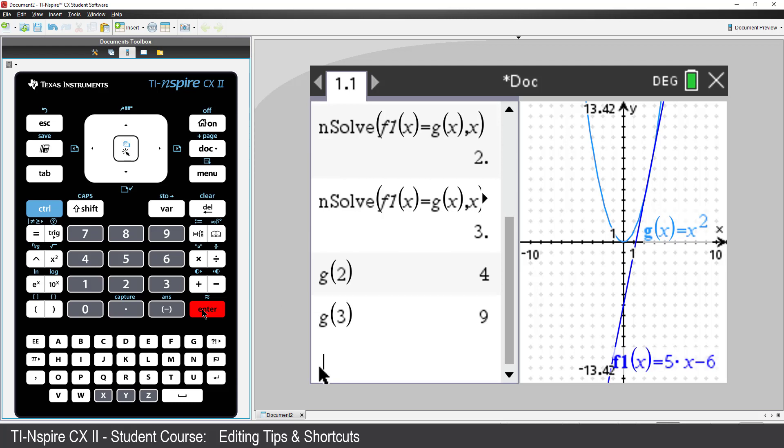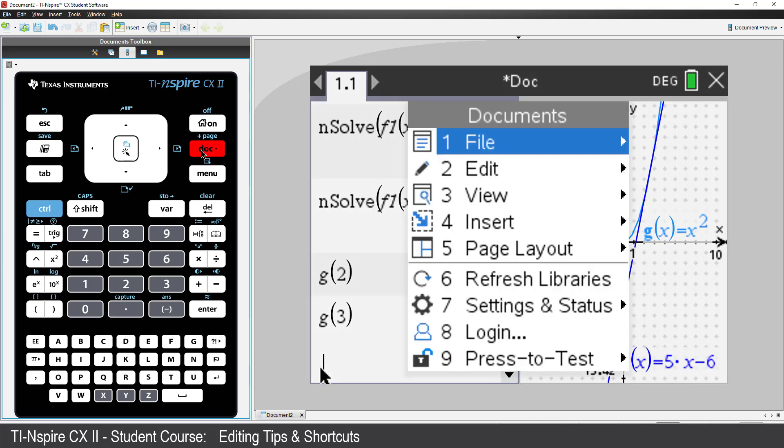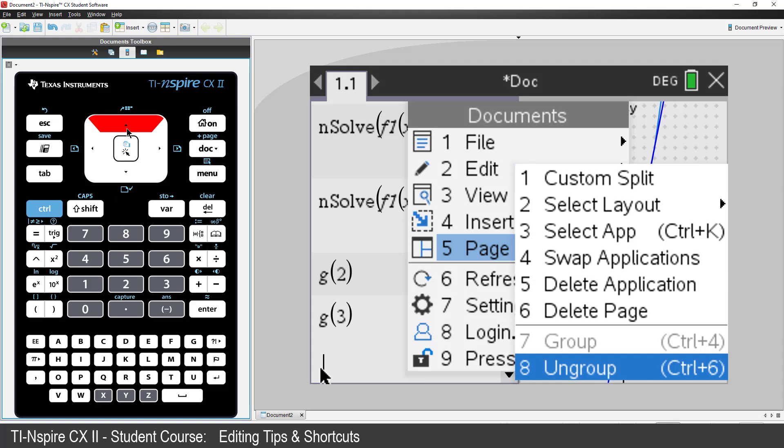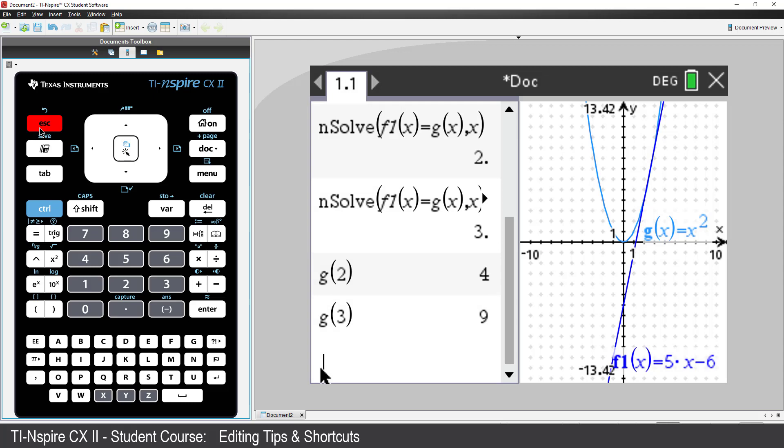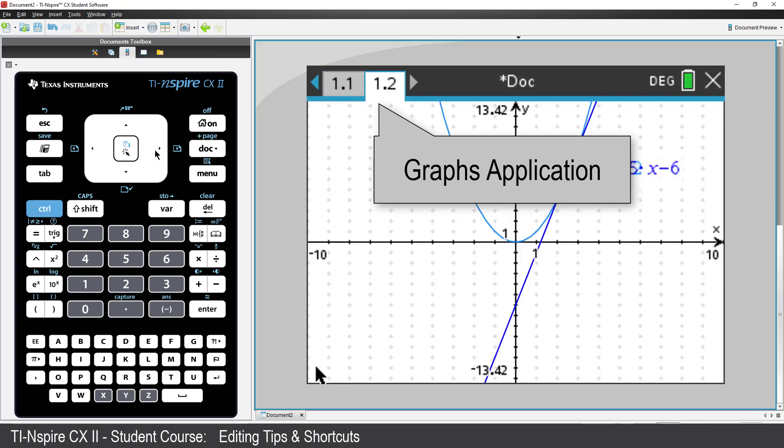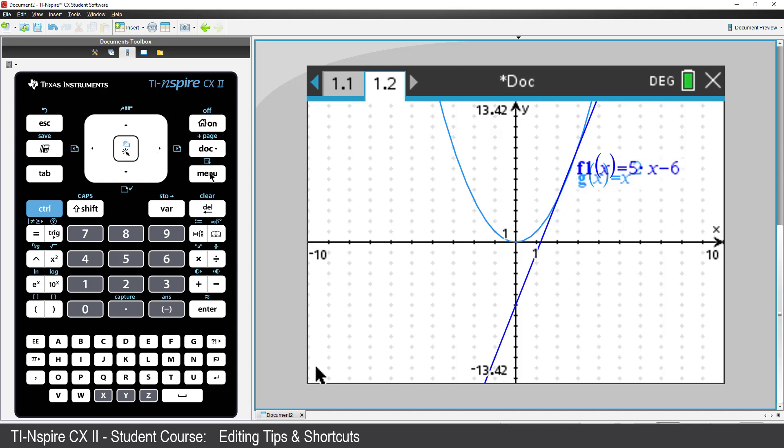I want to see the graph on a full screen. Press the Document key, select Page Layout. You'll see an option to Ungroup Applications. But notice next to it in the parentheses it says CTRL-plus-6. Let me just escape out of this menu and press CTRL-6. The calculator application is now full screen, but notice an additional tab has been added to my document. Press CTRL and right arrow, and there we have the graph application in full screen.